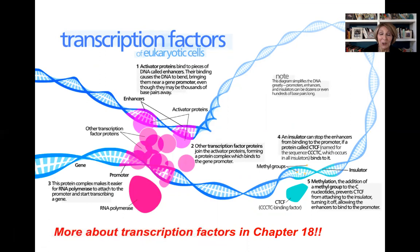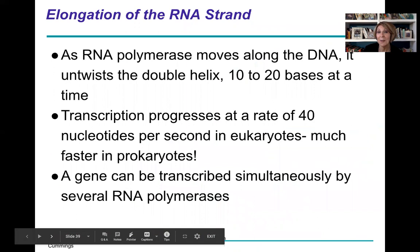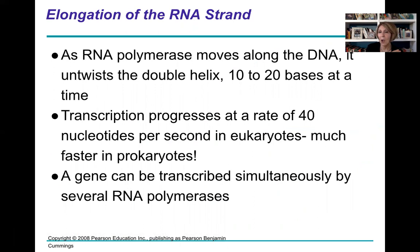We're going to learn more about these families of transcription factor proteins — some can cause the DNA to pull back on itself, some can actually thwart attachment of RNA polymerase to the DNA. In elongation, the RNA polymerase moves along the DNA, untwisting it, breaking hydrogen bonds, adding new nucleotide bases at a rate of about 10 to 20 at a time — about 40 nucleotides per second in eukaryotes.